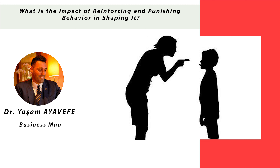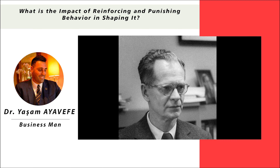What is the impact of reinforcing and punishing behavior in shaping it? If we want to define learning in the most general sense, it can be expressed as changes in the behavior of the living. The change in one's behavior indicates that it has taken on a new behavior, and these are often products acquired by learning. Behavioral development that is not acquired by learning is often a natural reflexive behavior, such as being startled by a noise and squinting our eyes in a change of light.